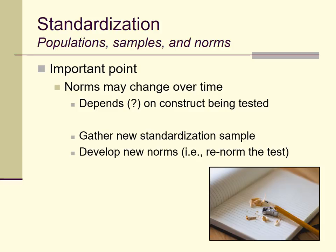Earlier in the lecture on ethics, I pointed out that one of the ethical responsibilities of test users — clinicians and researchers who administer tests — is to use the most current norms available. You may not want to spend the money on the newest version of the MMPI, or you may prefer an older version because that's what you learned in graduate school. But ethically and responsibly, you ought to use the newest and best tests, even though it costs more and takes time to learn. That's part of being a critical user of tests.